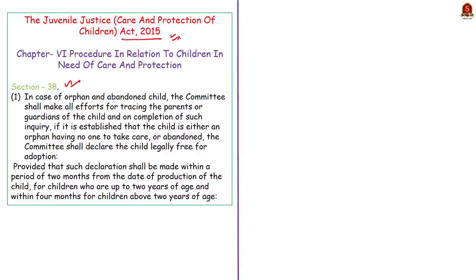After completion of such inquiry, if it is established that the child is either an orphan having no one to take care of, or abandoned, then the committee shall declare the child legally free for adoption. Such declaration shall be made within a period of two months if the child is up to the age of two years, and within four months if the child is above two years of age.